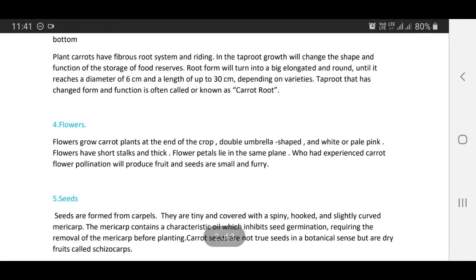Now we discuss flowers. Flowers grow on carrot plants at the end of the crop, double umbrella shaped and white or pale pink. Flowers have short stalks and thick petals. Flower petals lie in the same plane. Carrot flower pollination will produce fruit and seeds that are small and furry.